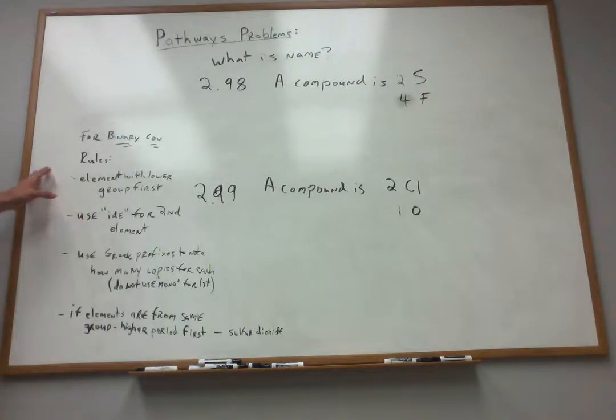For the binary covalent compounds, the rules are as follows. Figure out which element has a lower group number. That's the element that's going to go first in the name. If the elements are from the same group, the element with the higher period that's further towards the bottom of the periodic table gets to go first.